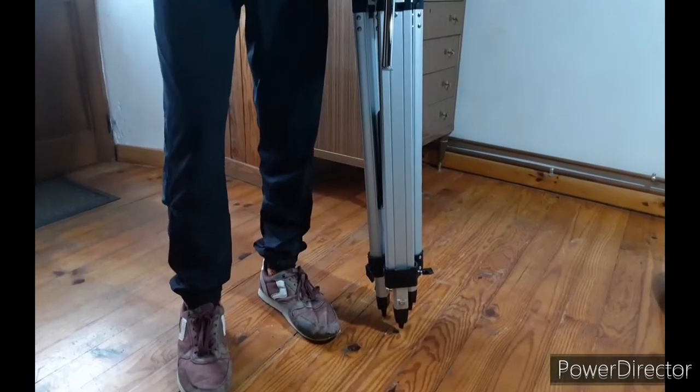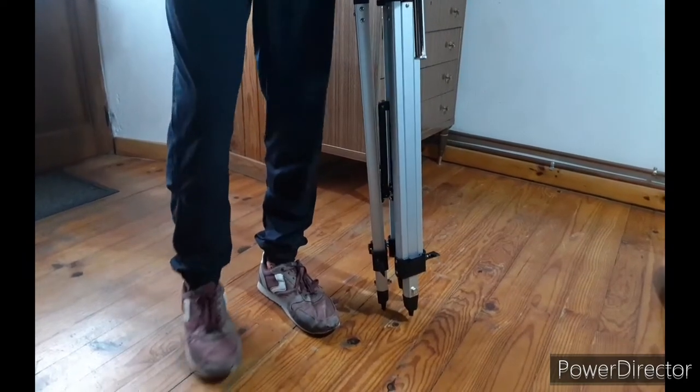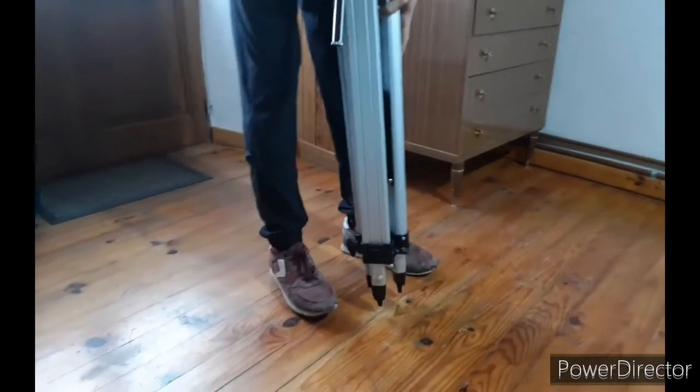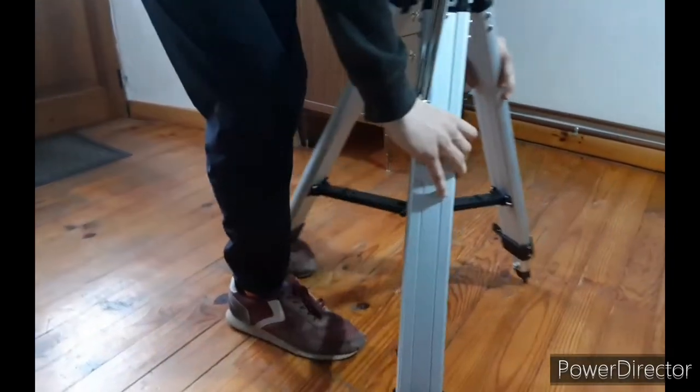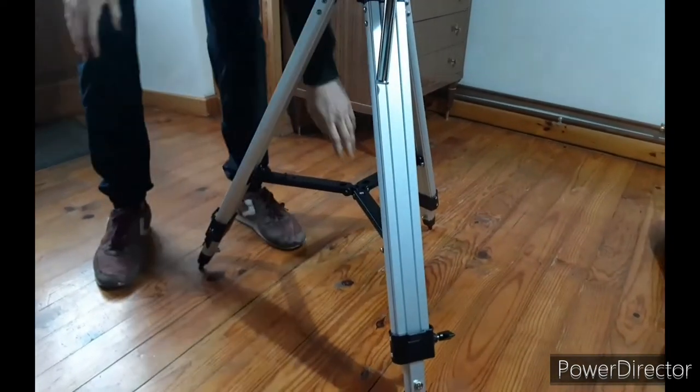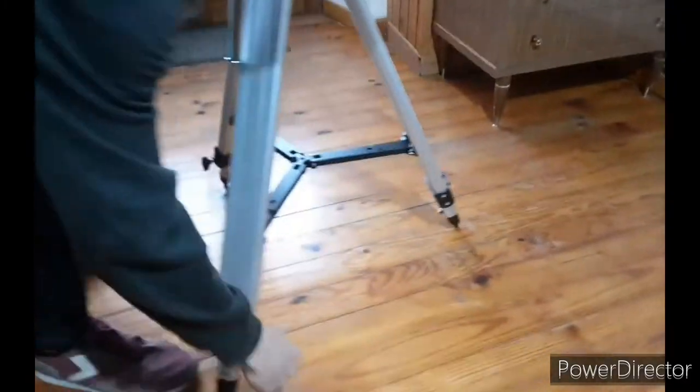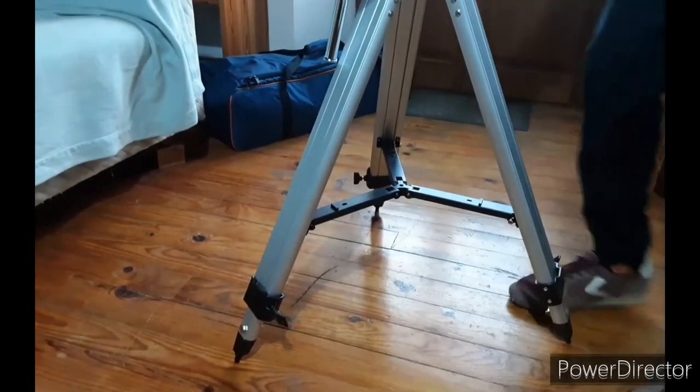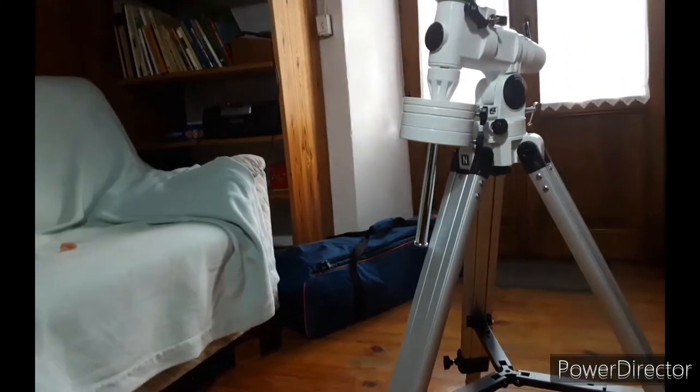Now as you can see, we have taken the tripod and mount from the guitar cover, and now we need to expand the three arms of the tripod to the limit. Then we have to fix the three parts. Make sure that they are correctly fixed so this doesn't move with the wind and obstacles of the night.